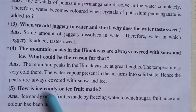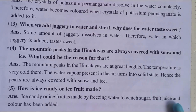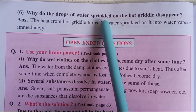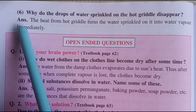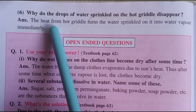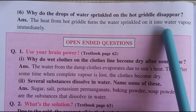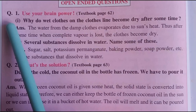Number 5: How is ice candy or ice fruit made? Answer: Ice candy or ice fruit is made by freezing water to which sugar, fruit juice, and color have been added. Number 6: Why do the drops of water sprinkled on a hot griddle disappear? Answer: The heat from the hot griddle turns the water sprinkled on it into water vapour immediately.